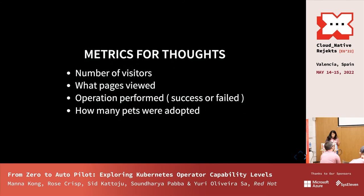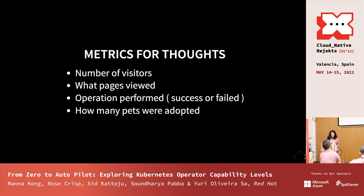For future metrics ideas, we could look at the number of visitors, which pages are viewed, what operations users performed, whether there was a surge, and whether updates were successful or failed. We could also track how many pets were adopted and their labels — these are the things we'd want visibility into before something crashes. This concludes metrics and alerts.